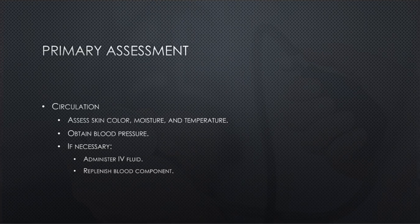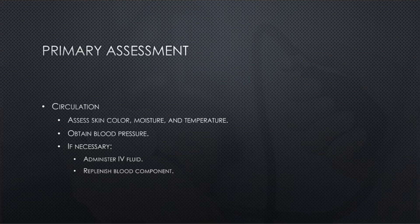Circulation: assess skin color, moisture, and temperature, and obtain blood pressure, heart rate, rhythm, and quality. If the patient is pale, cool, and moist, that may indicate shock or hypoglycemia. Hot, dry skin could be a sign of fever or hyperglycemia. IV fluid administration or blood replenishment may be necessary for these endocrine emergencies.